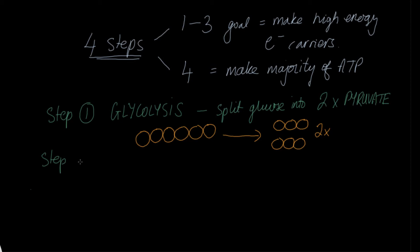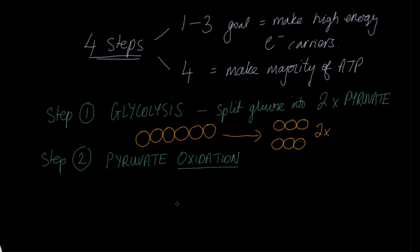Step two is called pyruvate oxidation. We oxidize pyruvate — oxidation means to lose electrons. Since steps one to three aim to make high-energy electron carriers, in this step we take an electron from each pyruvate and put it onto a high-energy electron carrier, which is then used in the final step. We end up with a molecule called acetyl-CoA.